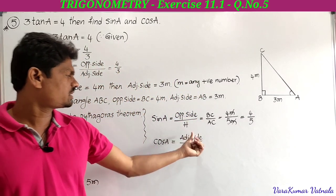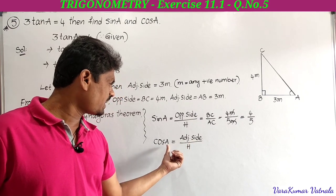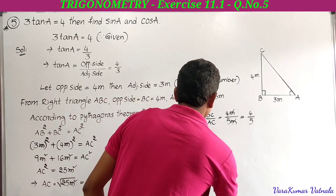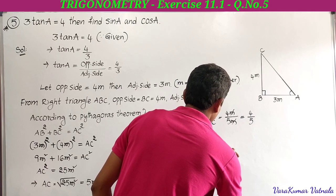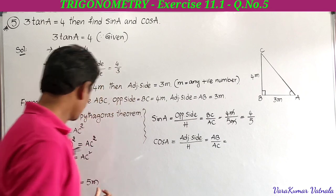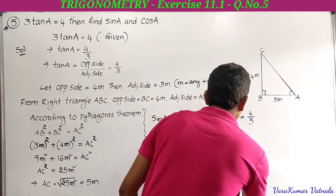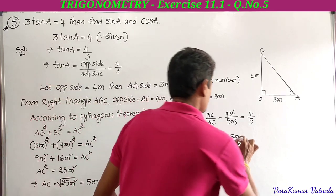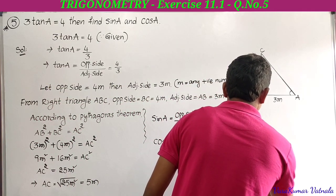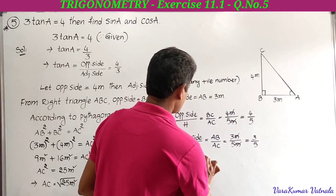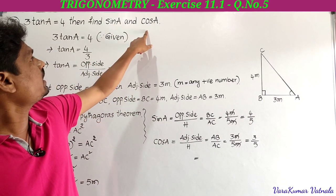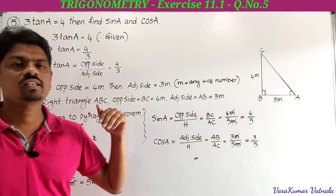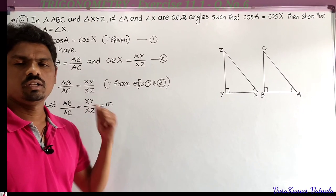Cos A equals adjacent side by hypotenuse. Adjacent side to angle A is AB, hypotenuse is AC. AB equals 3m and AC equals 5m. M gets cancelled, giving cos A equals 3 by 5. So sine A equals 4 by 5 and cos A equals 3 by 5. This is the fifth problem in exercise 11.1.